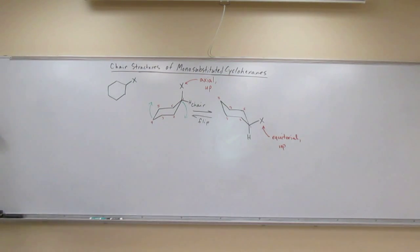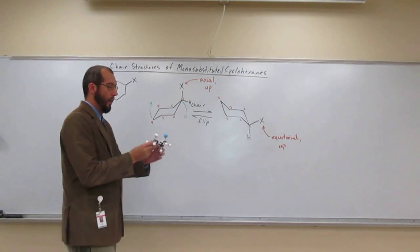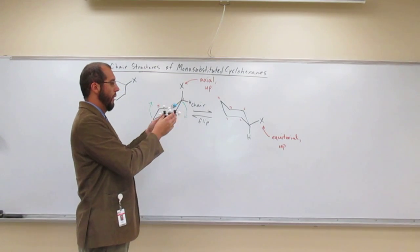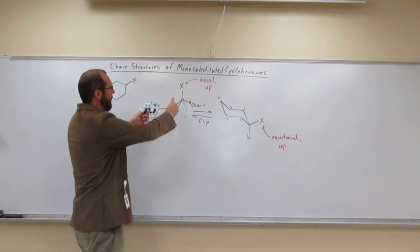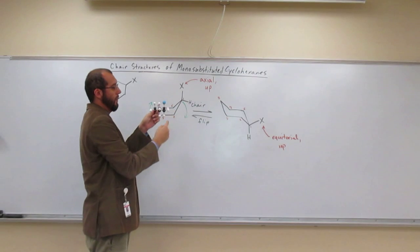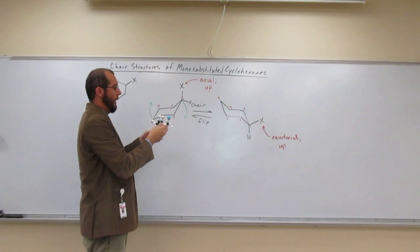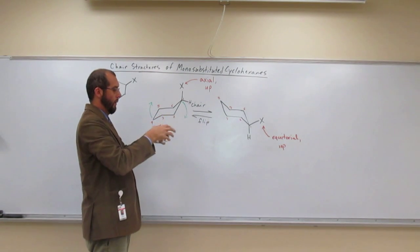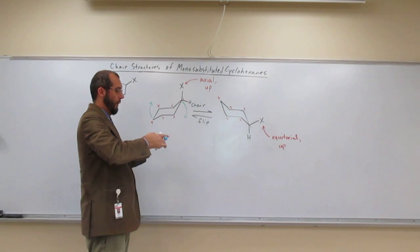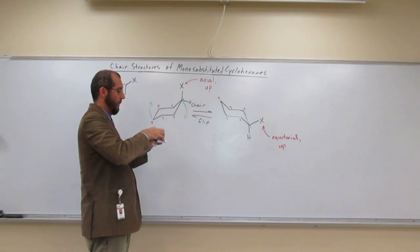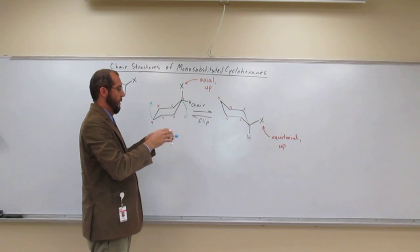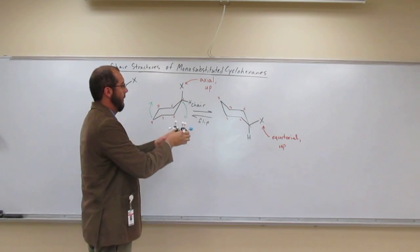And let's show, lastly, the chair flip with our model. So we have the axial up substituent, axial and up because the hydrogen's below it. So now let's do the chair flip. Take all the axials and go to equatorials. Easy enough.